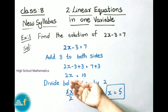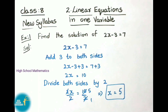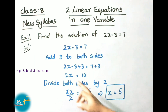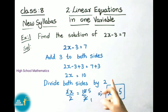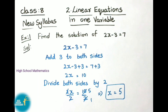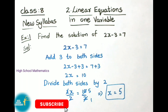Now for the x value we have 2, that is 2 into x. So to remove this 2 we are going to divide both sides by 2. So 2x by 2 equals to 10 by 2. Here the 2s are cancelled, and 2 fives are 10, therefore we got x value as 5. Therefore x equal to 5.